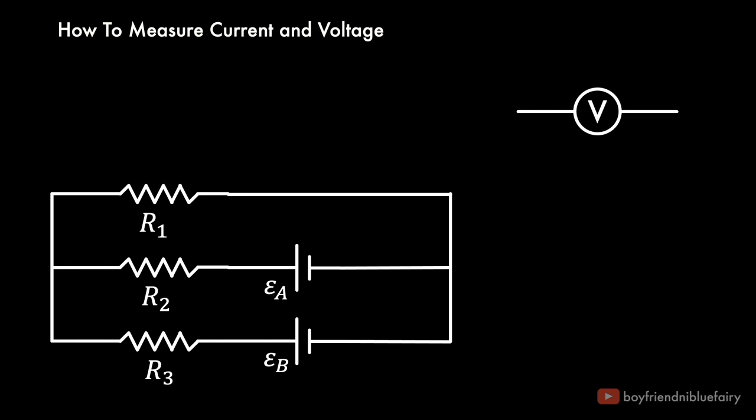But what if we want to measure the voltage or potential difference across resistor 1? To measure voltage on R sub 1, we simply need to connect the voltmeter in parallel with respect to the target component.